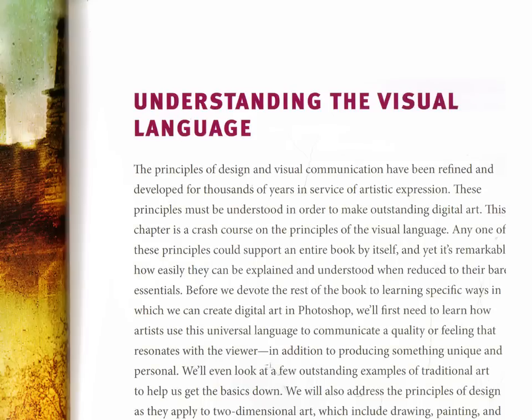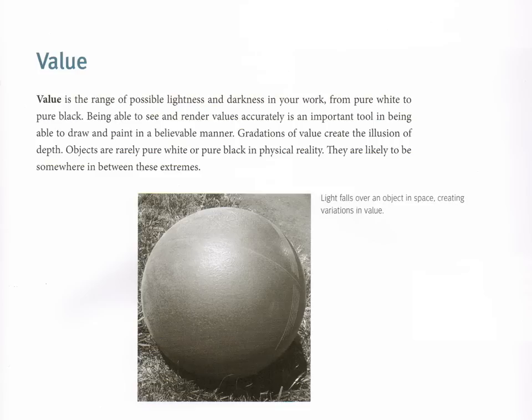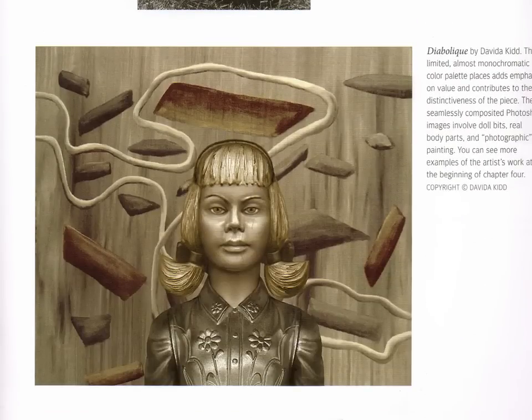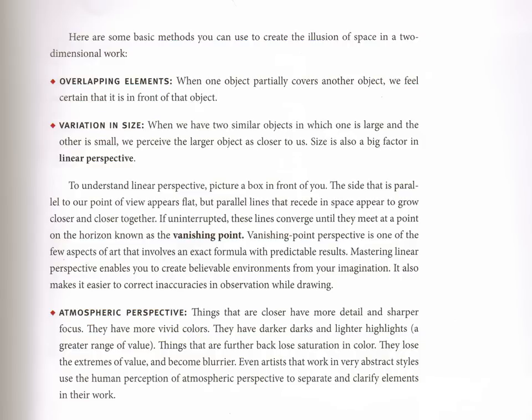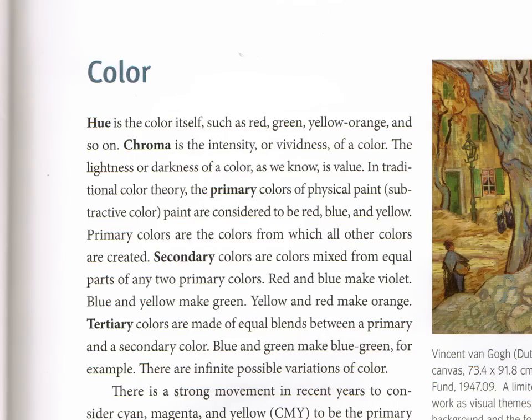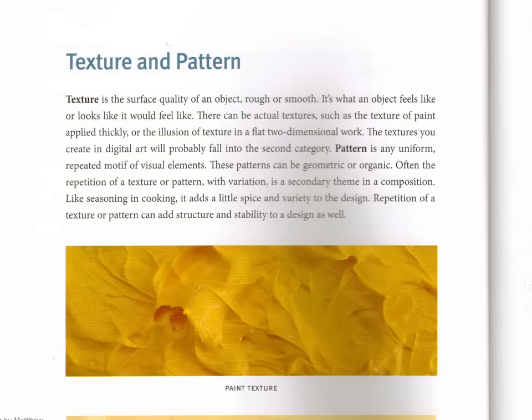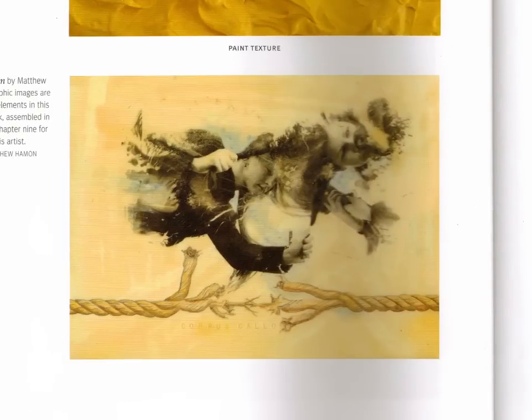The book is also placed in the context of the visual language and visual communications. These are things that don't change. What changes is how they're applied, or the possibilities for how they can be applied to digital art. Visual thinking is thinking of things as a whole — it looks at the relationships of things rather than the individual parts. The sum is greater than the parts, and it's how things are put together and arranged that communicates something to us. One of the amazing things about the visual language is that an artist can do something completely unique and completely personal where nobody but that artist could make that work, and it could still communicate something that is readable to the viewer.